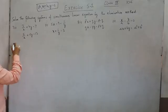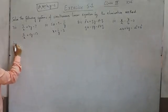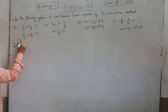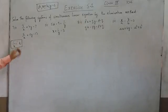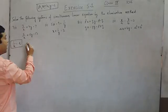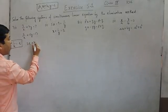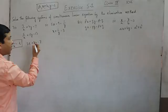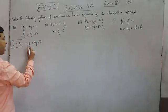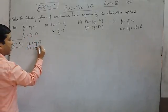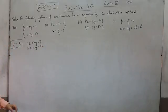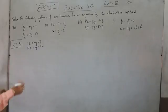In this case, what we can do is we can take 1 upon x as a value t. So when I take the value of 1 upon x as another variable t, this will become 3t plus 4y is equal to 7. And the second equation will become 5t plus 6y is equal to 13. So now this has been made as the linear equation itself.